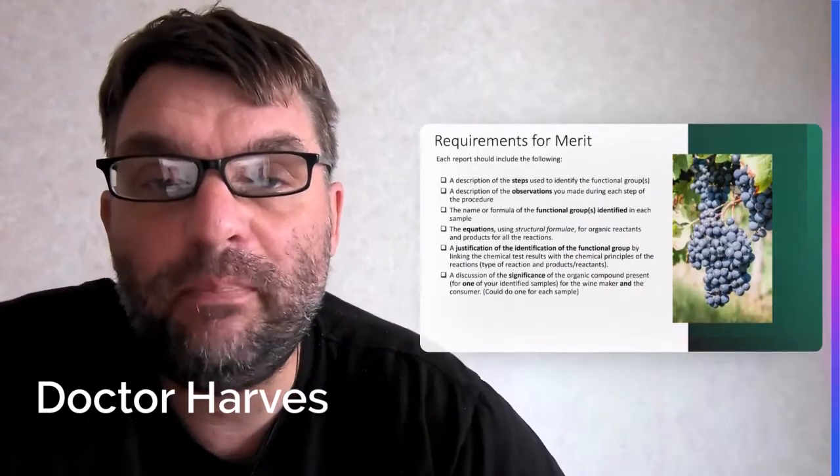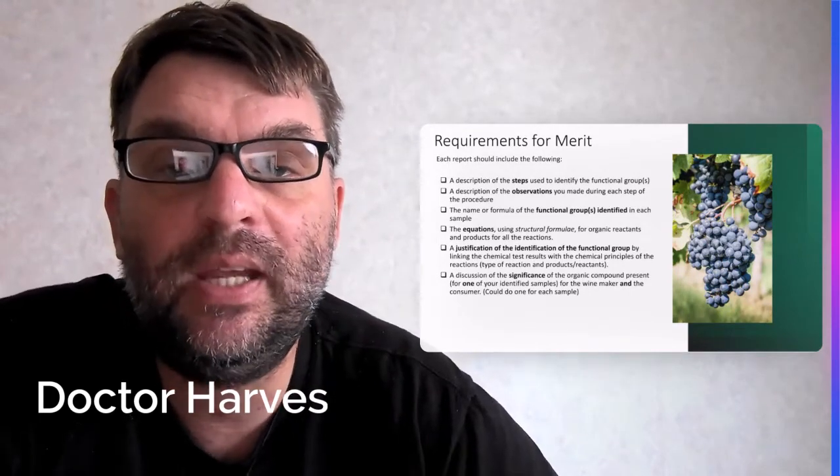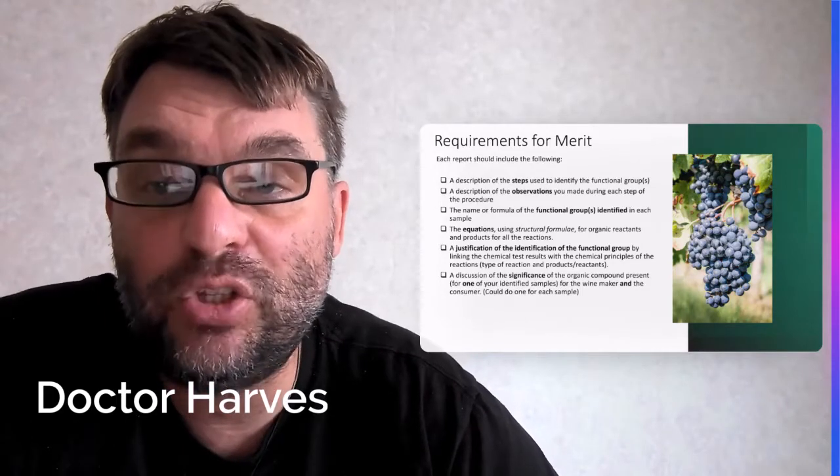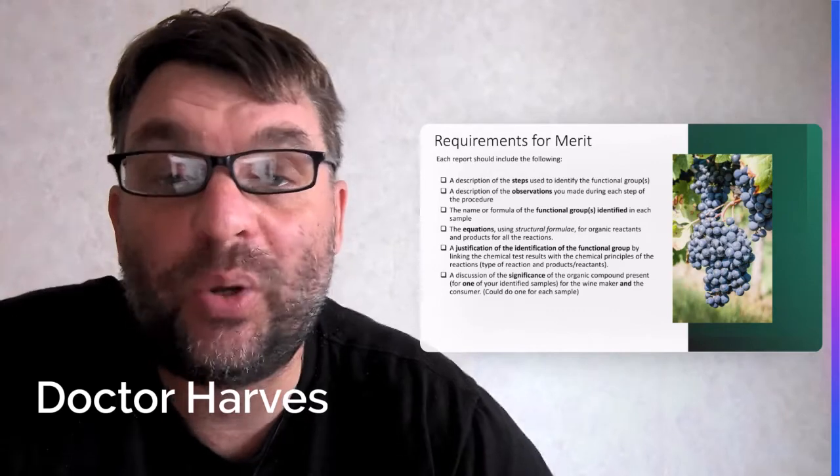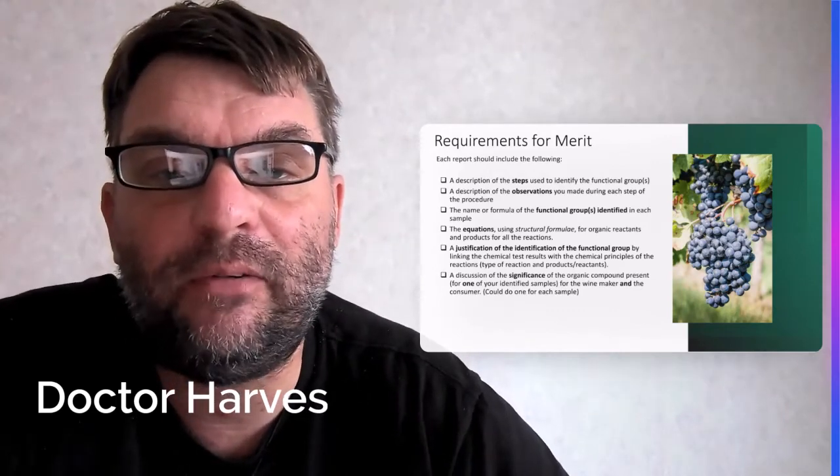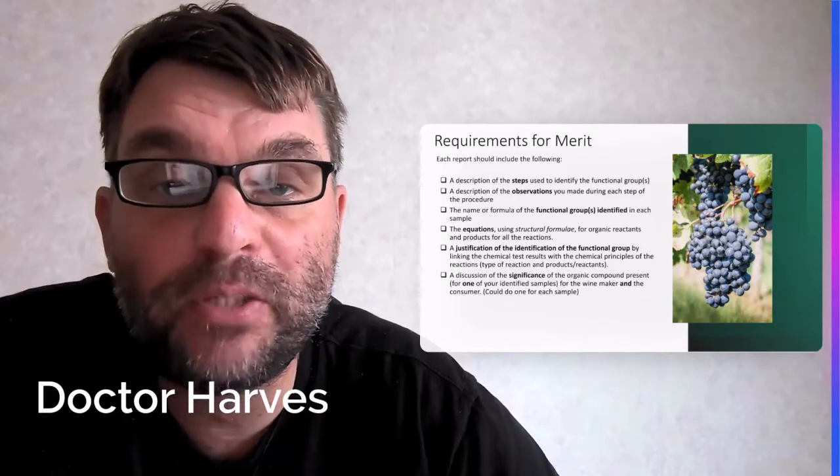So in terms of Merit, it gets a little bit more complicated. So just as for Achieved, describing the steps and describing observations for your chemical quantitative tests, and then also again, like Achieved, naming the formula of the functional groups that are present, and therefore the compound that is present.